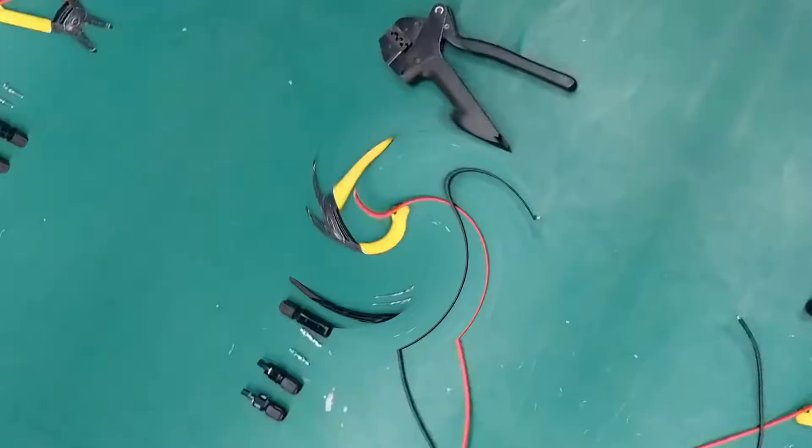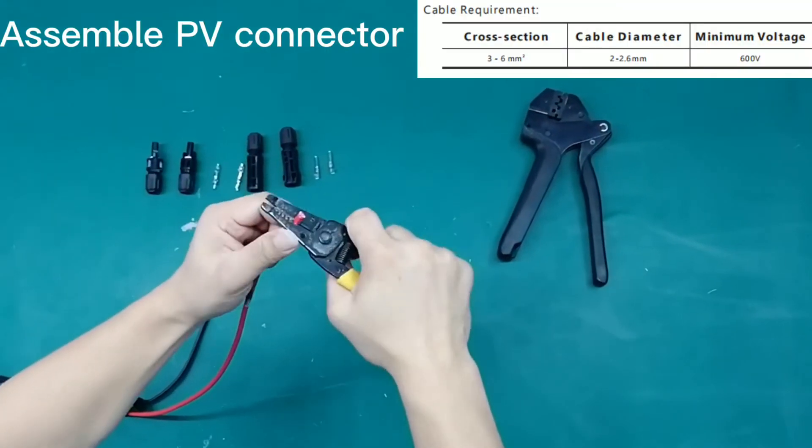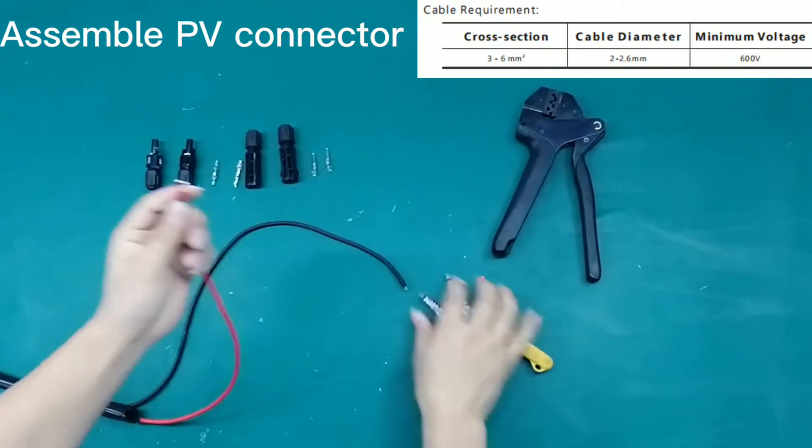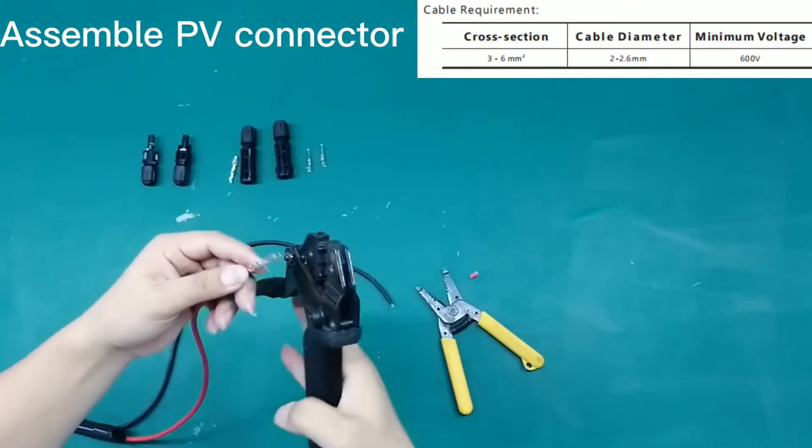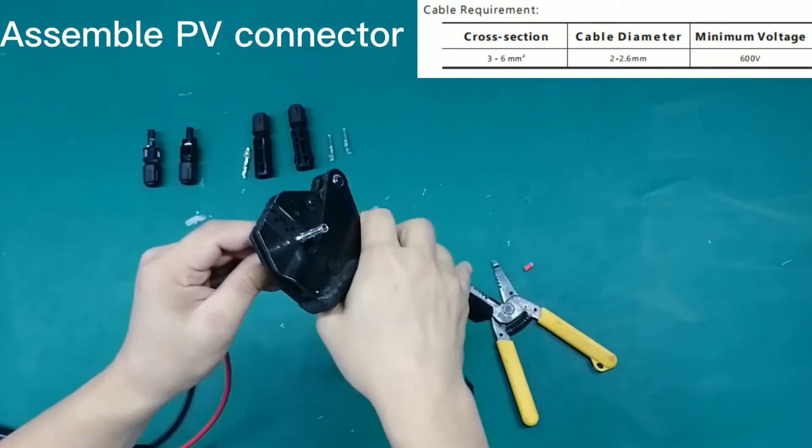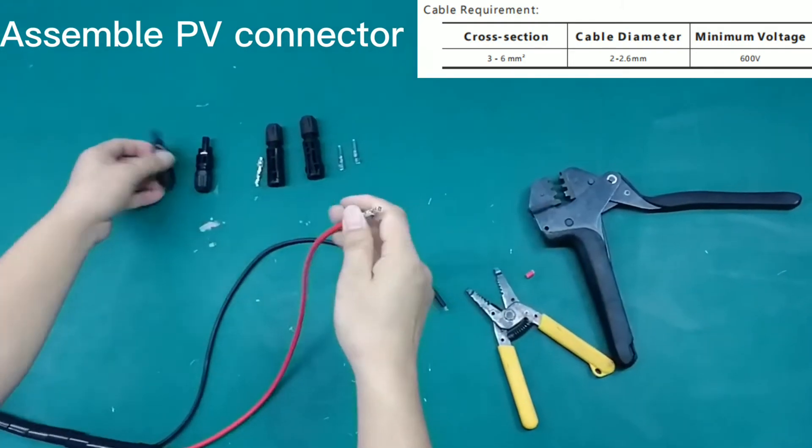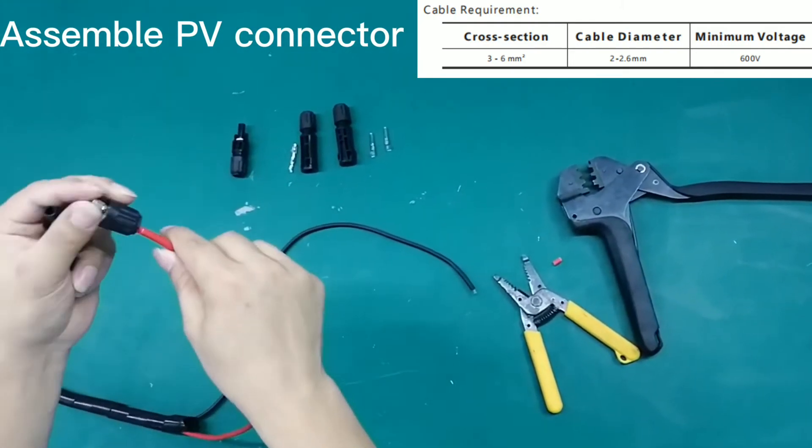Let's prepare the cables now. Assemble the PV connector: strip 6-8mm insulation from the cable end. Assemble the cable ends to crimp contacts. Lead the cable through the cable gland.